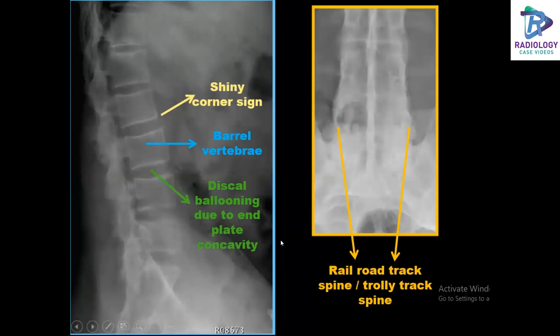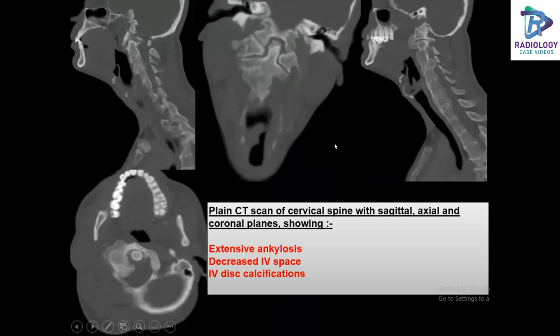Lateral and frontal radiographs of the spine showing the shiny corner sign, barrel-shaped vertebrae, discal ballooning due to end plate concavities, and the railroad or trolley track spine. Plain CT scan images of the cervical spine in sagittal, axial, and coronal planes in bone window show extensive ankylosis and decreased intervertebral disc spaces.